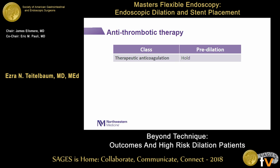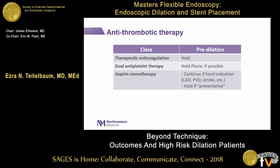Antithrombotic therapy is an increasingly common issue. Therapeutic anticoagulation with Coumadin or DOACs should be held — the last thing you want is a patient who is therapeutically anticoagulated bleeding after dilation and requiring active reversal, which puts them at higher thrombotic risk. For patients on dual antiplatelet therapy, hold Plavix if possible, sometimes after discussion with the cardiologist. Aspirin monotherapy can generally be continued if there's a hard indication such as coronary artery disease or prior stroke; if it's purely preventative, I'll hold it.